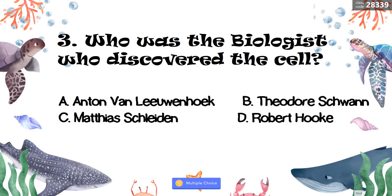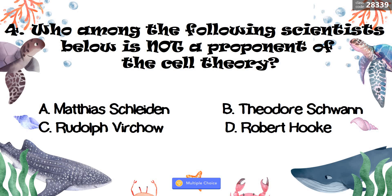Number four: Who among the following scientists is not a proponent of the cell theory? A. Matthias Schleiden. B. Theodorus I. C. Rudolf Virchow. D. Robert Hooke. The correct answer is Robert Hooke.